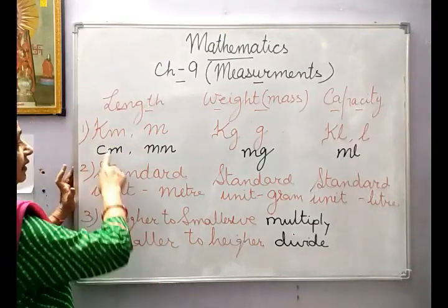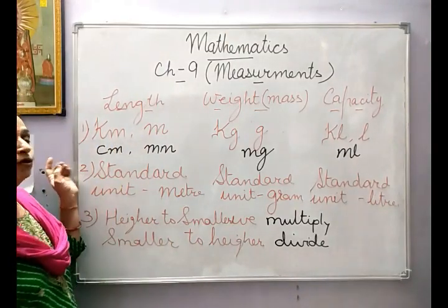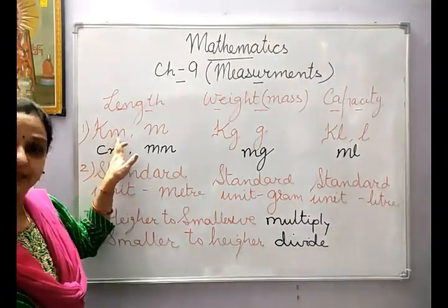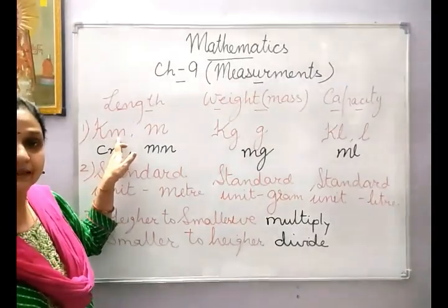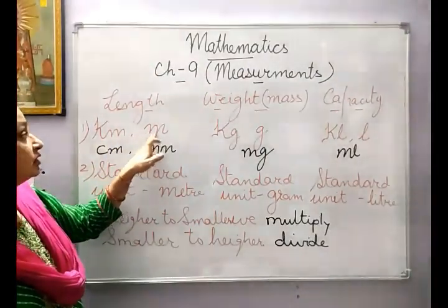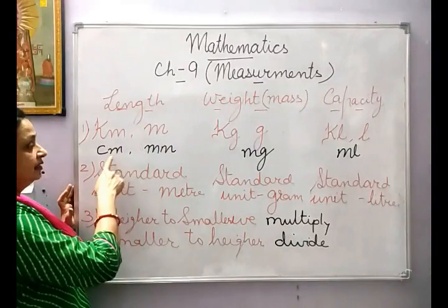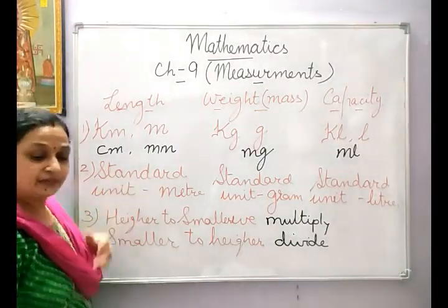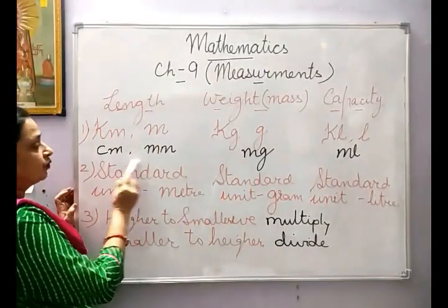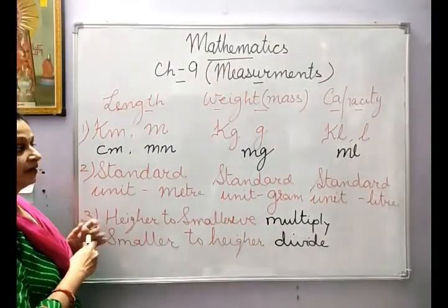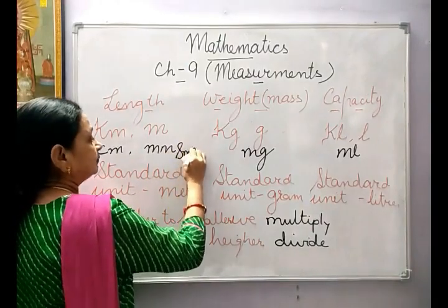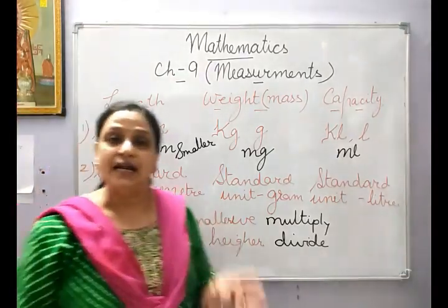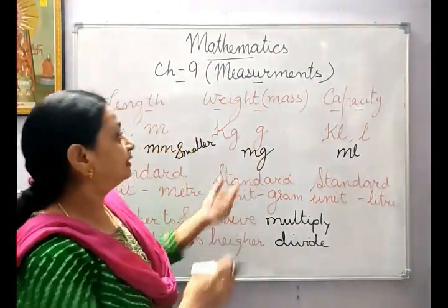Length can be measured in kilometres and metres. Specifically, kilometres is used for distance, which is also a type of length. Then another unit used under length is metre, centimetre, and millimetre. Out of which centimetre and millimetre are used for smaller lengths, and kilometres and metres are used for larger lengths.